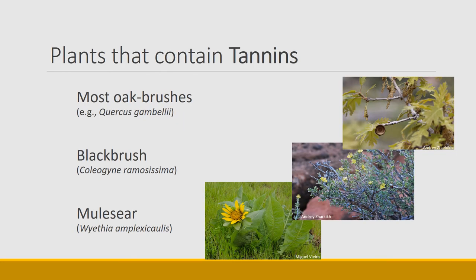Plants that contain tannins include oak brushes — most oaks do, and if you've ever collected acorns and broken them open, your thumbs kind of get black, showing that tanning effect. Black brush, common in the southwest and southern Utah area, is called black brush because it turns black with tannins. Mule's ear is another plant — it has a very strong smell and if it sits for a while, those beautiful leaves will just turn black. All of those are plants that contain tannins.